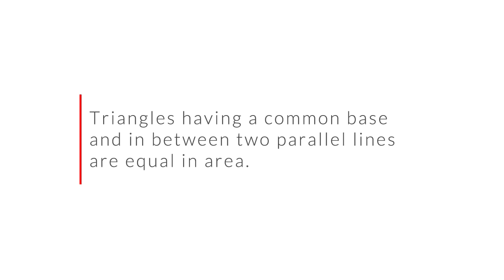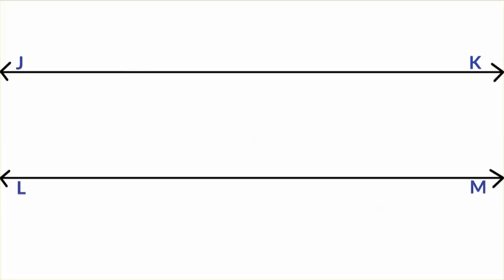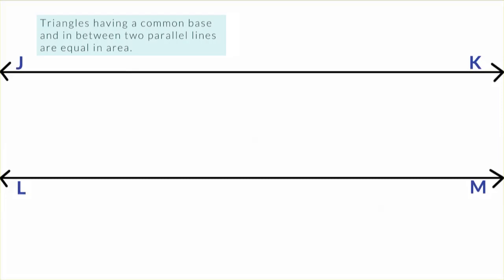So let us draw two parallel lines. Let us name the first line, or the top line, as JK and the bottom line as LM. So JK and LM are parallel. Again, the theorem says triangles having a common base and in between two parallel lines are equal in area.